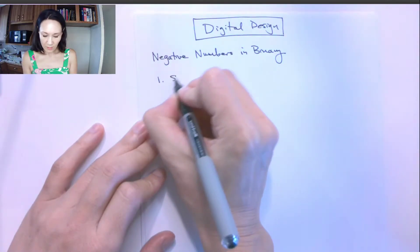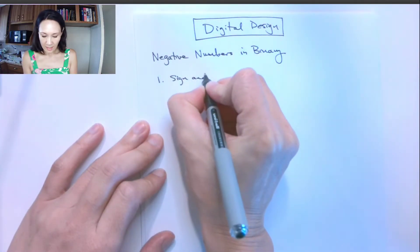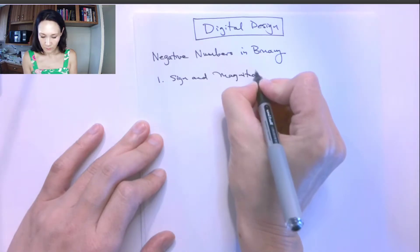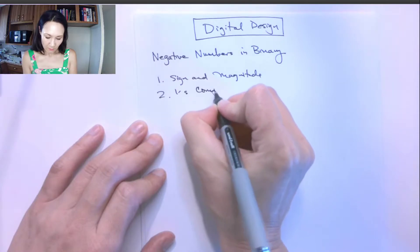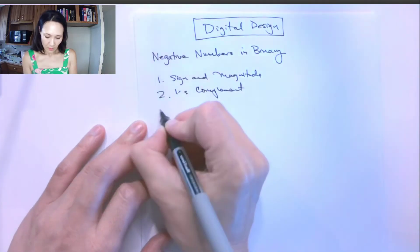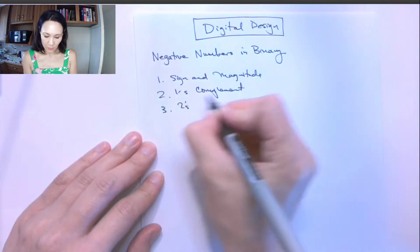The first one is called sign and magnitude. The second is one's complement. And the third is two's complement.